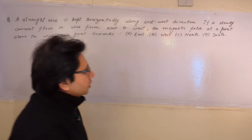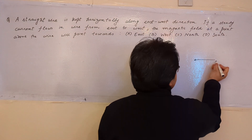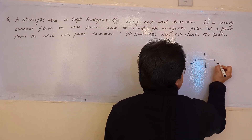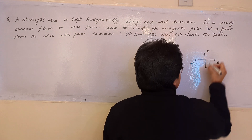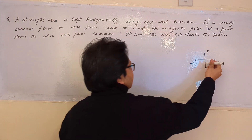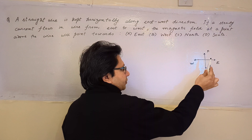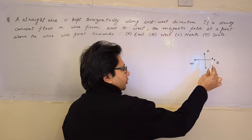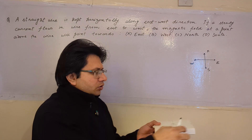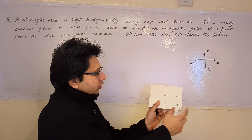It is given that the current is flowing in the east-to-west direction. So let's set up our coordinate system: this is west, this is east, this is north, and this is south. The current is flowing in the east-to-west direction. In the east-west and north-south plane, we can visualize the setup.